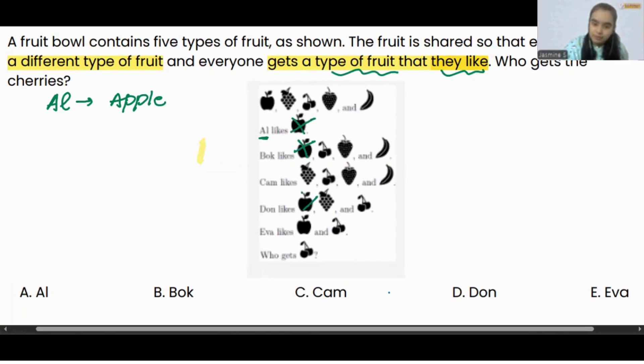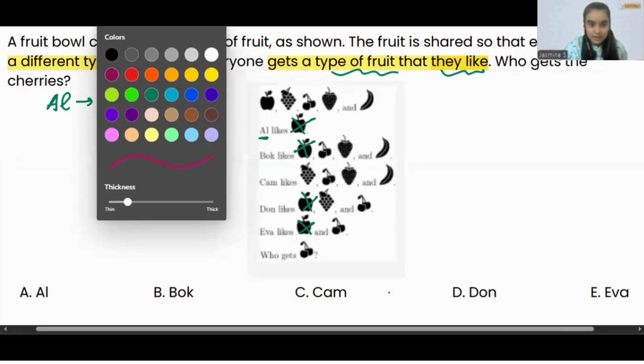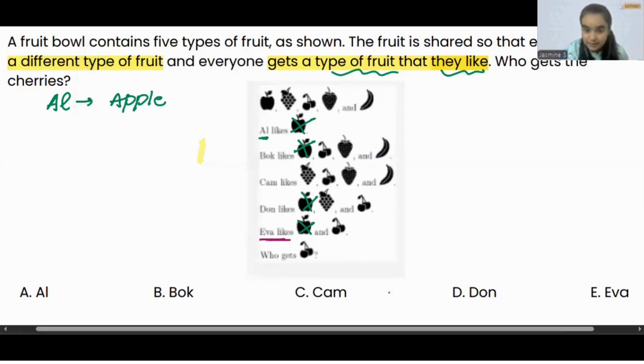Now from here I can see that Eva now has the least number. Apple is already given to Al, so she is left with only cherries, correct? So Eva is going to get cherries.